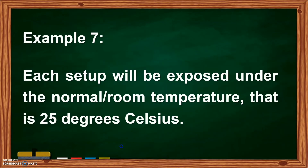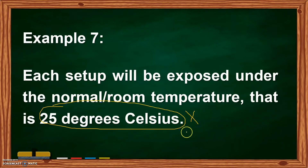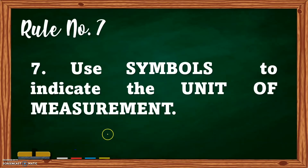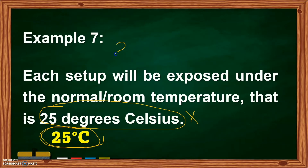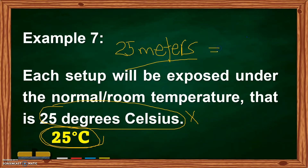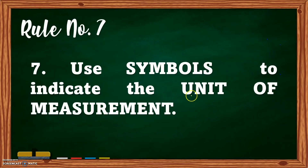Example number seven: 'Each setup will be exposed under the normal or room temperature that is 25 degree Celsius.' What is wrong? It is the unit — '25 degree Celsius' should be written using the symbol, as '25 °C.' Rule number seven: use symbols to indicate the unit of measurement. For example, instead of saying '25 meters' in words, write '25 m.' You must know the correct use of units of measurement.